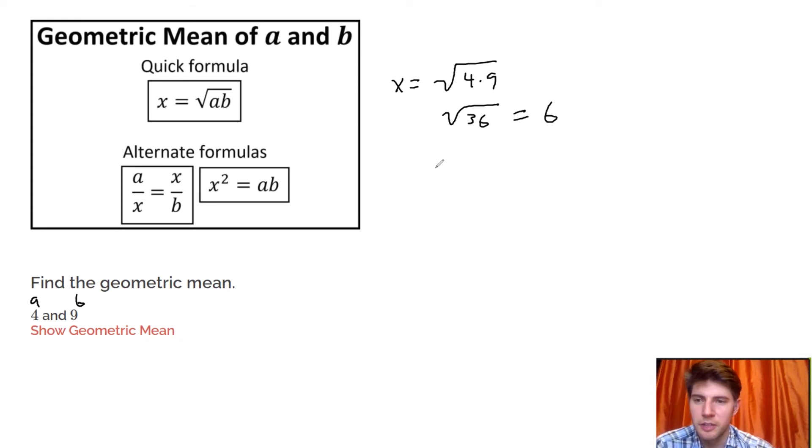We could also use this other formula, which says 4 over x equals x over 9. To solve this proportion, we're going to cross-multiply. x times x is x squared, and 4 times 9 is 36. And now when we square root, we get x equals 6. Same thing we got up here.